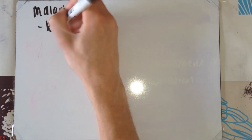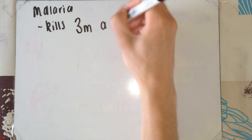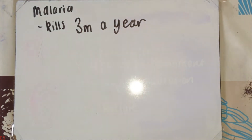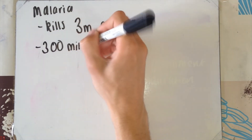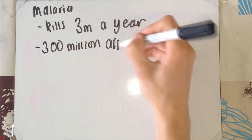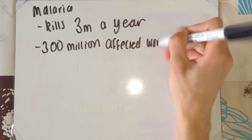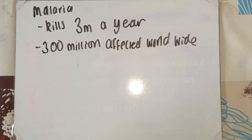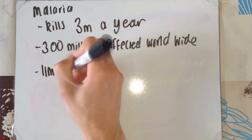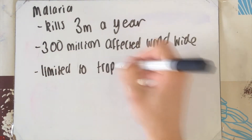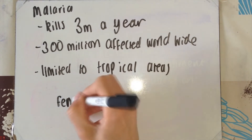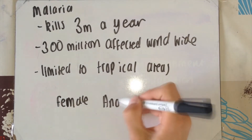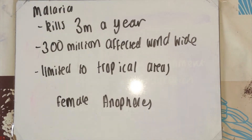Malaria kills 3 million people a year, and 300 million people are currently affected worldwide. The female Anopheles mosquito is limited to tropical areas, meaning malaria is limited to tropical areas. However, with climate change, it will soon be spreading further north and south.